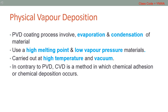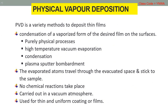PVD technologies typically operate at very high temperatures and vacuum, requiring special attention by skilled personnel. In contrast to PVD, CVD is a method in which chemical adhesion or chemical deposition occurs, whereas PVD just involves evaporation and condensation of pure materials. PVD is a variety of vacuum deposition and a general term used to describe any of a variety of methods to deposit thin films by the condensation of a vaporized form of the desired film material onto various substrate surfaces.